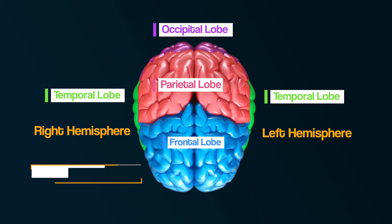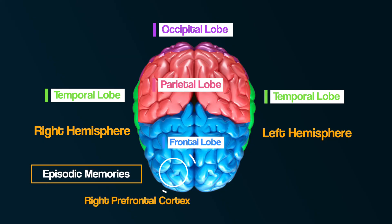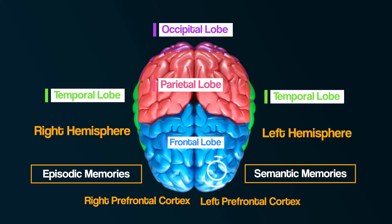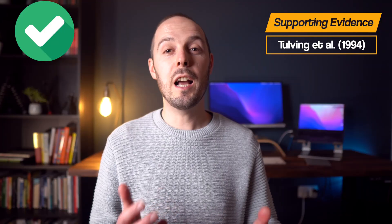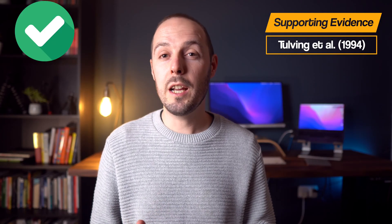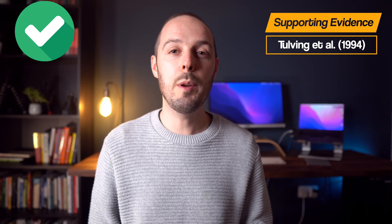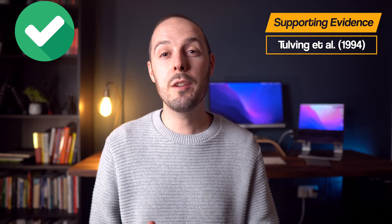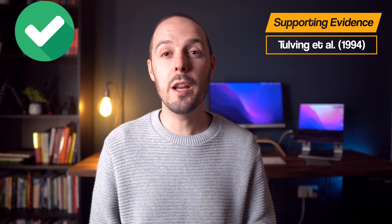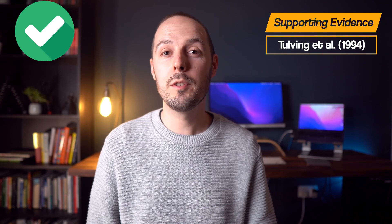Episodic memories tended to activate the right prefrontal cortex, whereas semantic memories tended to activate the left prefrontal cortex. This nicely demonstrated how there are different types of long-term memory and how different parts of the brain are involved.